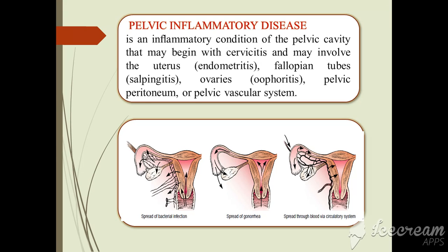In pathophysiology, the organisms enter the body as described in the pictures: through the vagina, pass through the cervical canal, colonize the endocervix, and move upward into the uterus. The organisms may then proceed to the fallopian tubes and ovaries and into the pelvis.